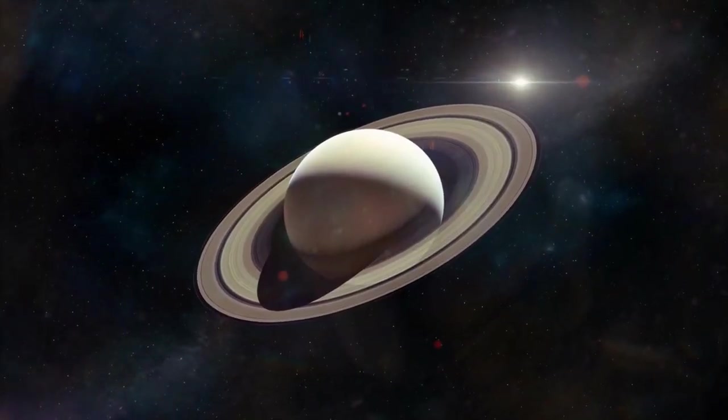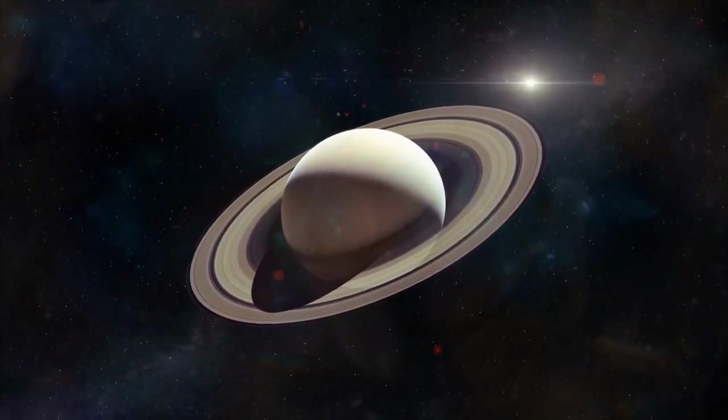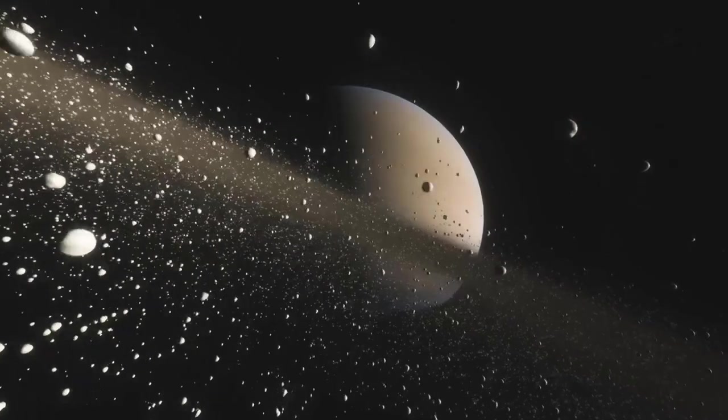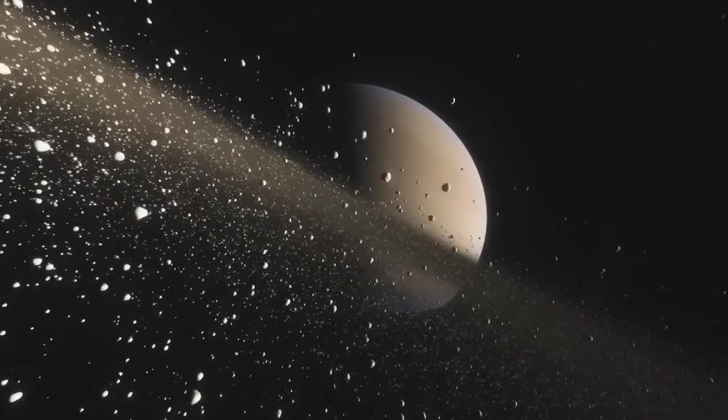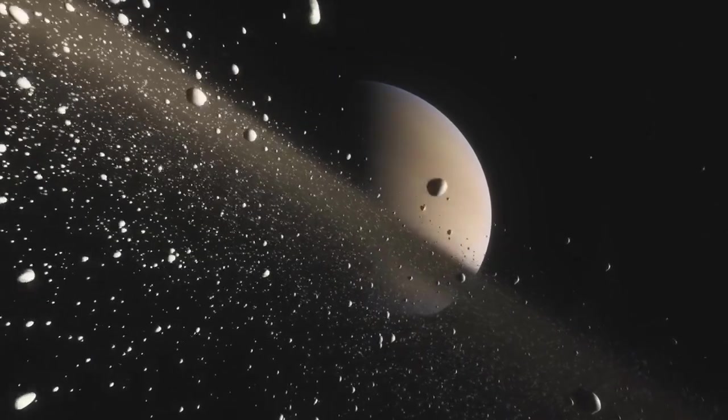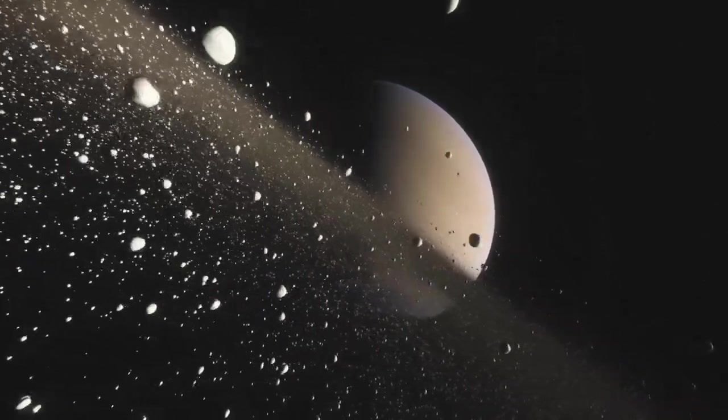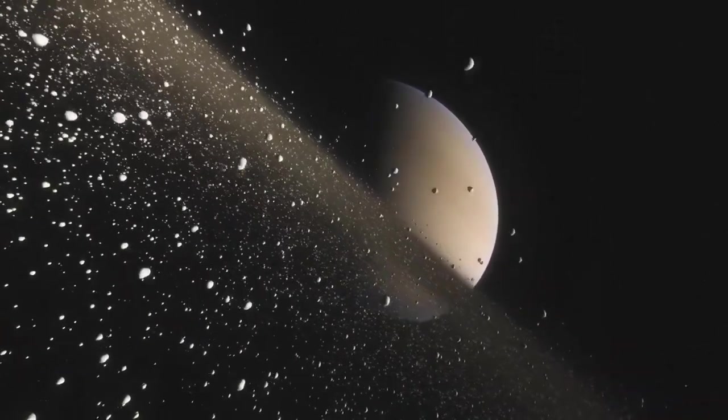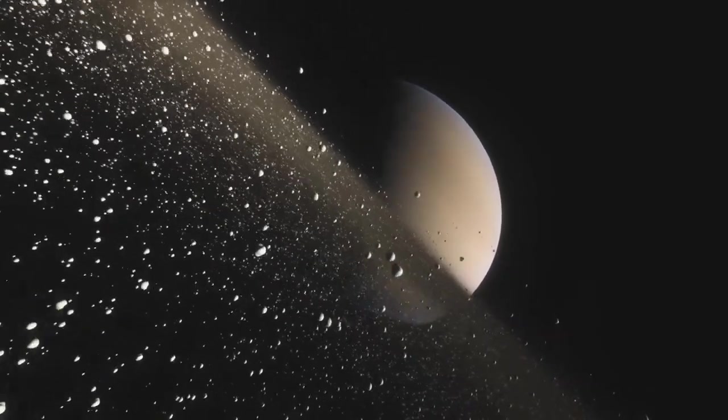Saturn's most remarkable feature is its stunning ring system, visible from Earth with a telescope. These rings are made up of billions of icy and dusty particles, ranging in size from micrometers to a couple of meters, and are believed to be relatively young, having formed within the last 100 million years.